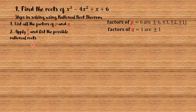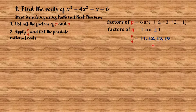Then apply p divided by q and list the possible rational roots. To find the possible rational roots, divide the factors of p by the factors of q. For example, 6 divided by 1 equals 6, 3 divided by 1 equals 3, and so on. So the possible rational roots are positive and negative 1, positive and negative 2, positive and negative 3, and positive and negative 6.